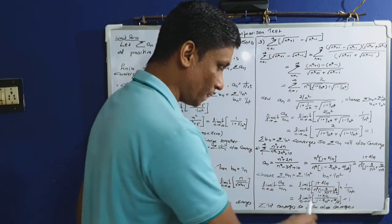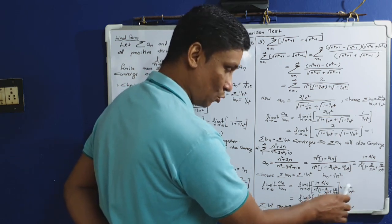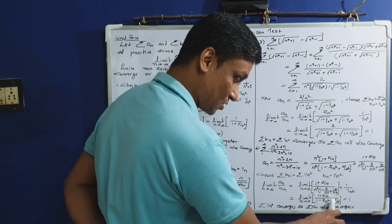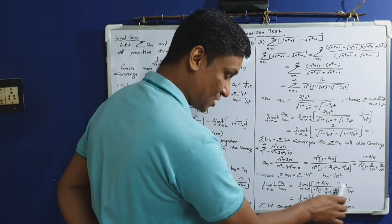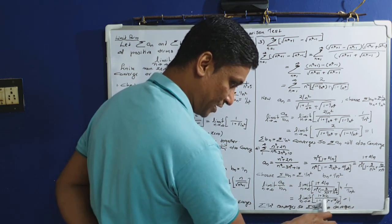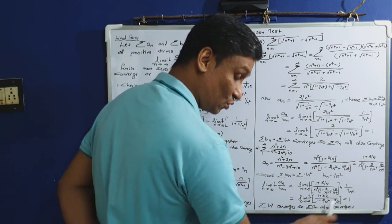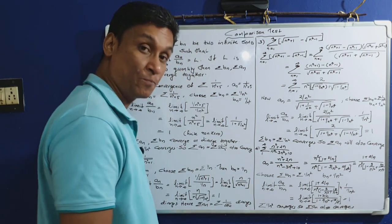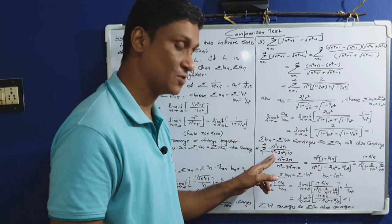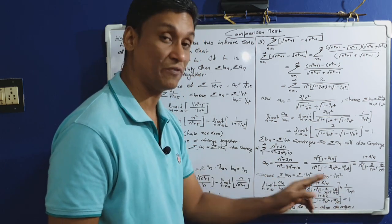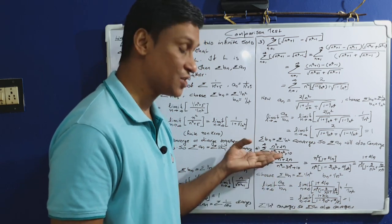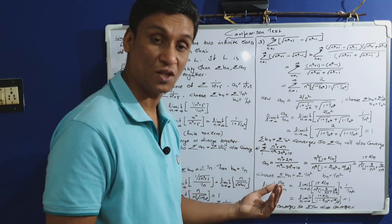The 1/n² in a_n and the 1/n² in b_n cancel, leaving limit n tends to infinity of (1 + 2/n) divided by (1 − 3/n² + 10/n⁴). As n tends to infinity, all terms with n in the denominator go to 0, giving (1+0)/(1−0+0) = 1. So the limit equals 1, a finite nonzero quantity. Sigma b_n equals sigma 1/n² which is convergent, so by the comparison test the original series is also convergent.